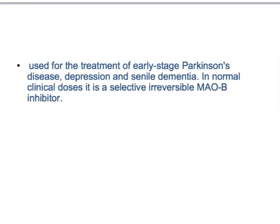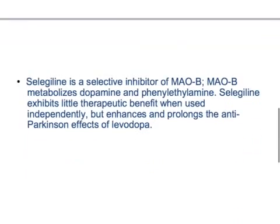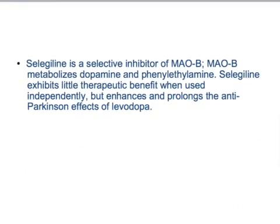Selegiline is a selective MAO-B inhibitor used for the treatment of early-stage Parkinson's disease, depression, and senile dementia. At normal clinical doses, it is a selective irreversible MAO-B inhibitor. When MAO-B is inhibited, dopamine is not converted into metabolites, so the dopamine level increases, which helps in treating Parkinson's disease. MAO-B metabolizes dopamine and phenylethylamine.